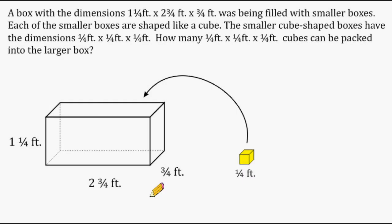We have a problem here which requires us to figure out how many cube-shaped boxes can fit inside a larger box shaped like a rectangular prism. The problem states that a box with dimensions one and one quarter feet by two and three quarters feet by three quarters of a foot was being filled with smaller boxes. Each of the smaller boxes is shaped like a cube with dimensions a quarter foot by a quarter foot by a quarter foot.